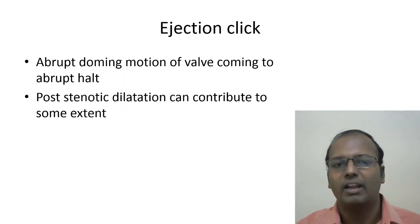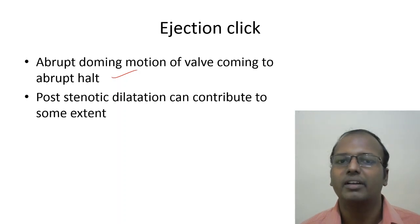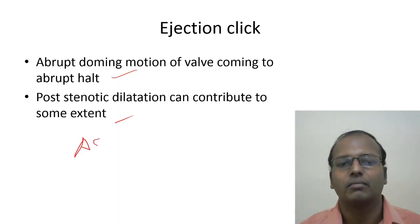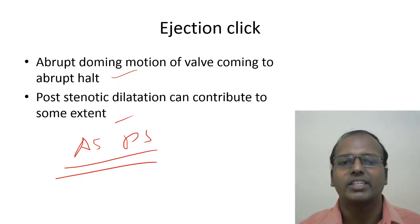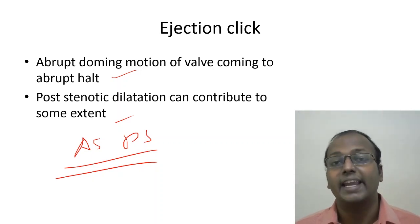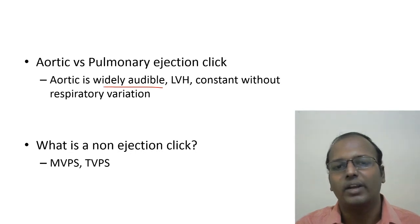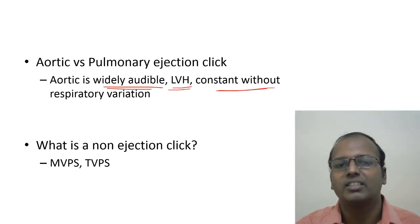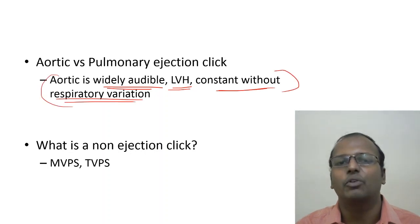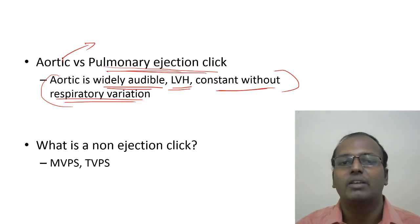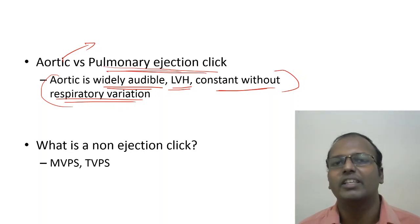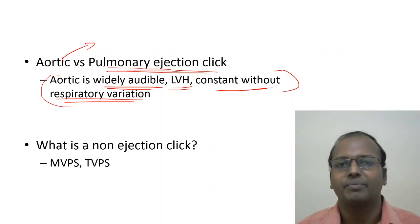Ejection click results from the abrupt doming motion of a stenotic semilunar valve coming to an abrupt halt. It is classically heard in aortic stenosis and pulmonary stenosis — representing the opening of these stenotic semilunar valves. Atrioventricular valve opening produces an opening snap; semilunar valve opening produces an ejection click. Aortic ejection click is widely audible, associated with LVH, and constant without respiratory variation. Pulmonary ejection click uniquely increases with expiration — unlike all other right-sided heart sounds which increase with inspiration.